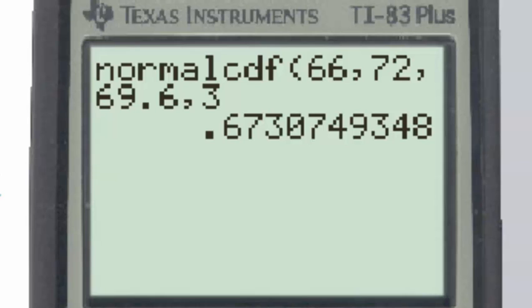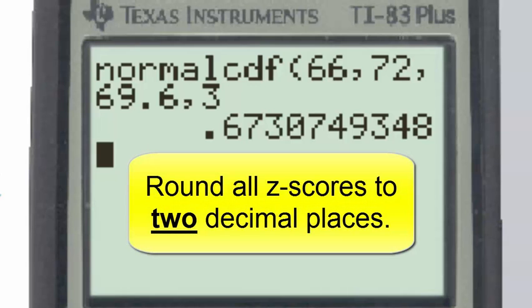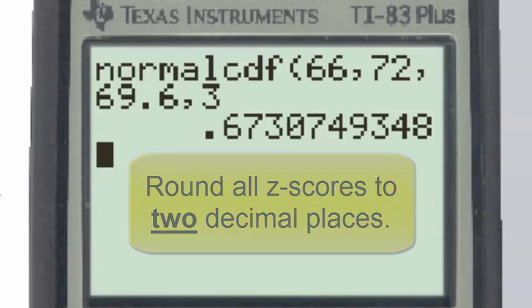However, if the z-scores had required any rounding to get to two decimal places, then the answer gotten using this third method could very well be different. That is because this method does not round z-scores in the interim steps. Therefore, we will adopt the convention of rounding z-scores to two decimal places when answering normal distribution questions of this nature.